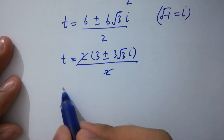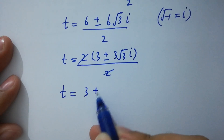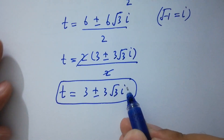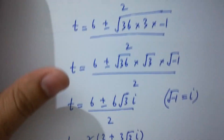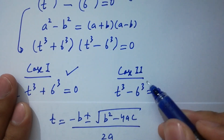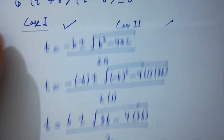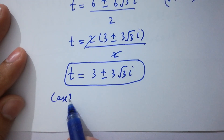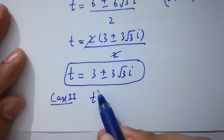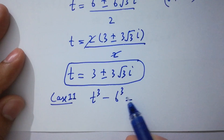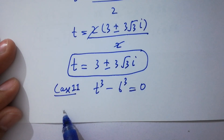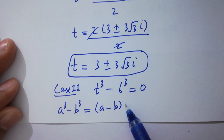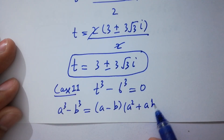We get t = 3 ± 3√3·i — our complex solutions. Moving to the second case: t^3 - 6^3 = 0. We apply the difference of cubes formula: a^3 - b^3 = (a - b)(a² + ab + b²).